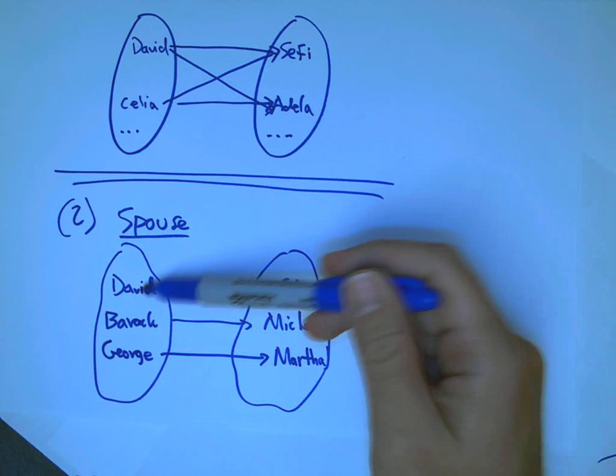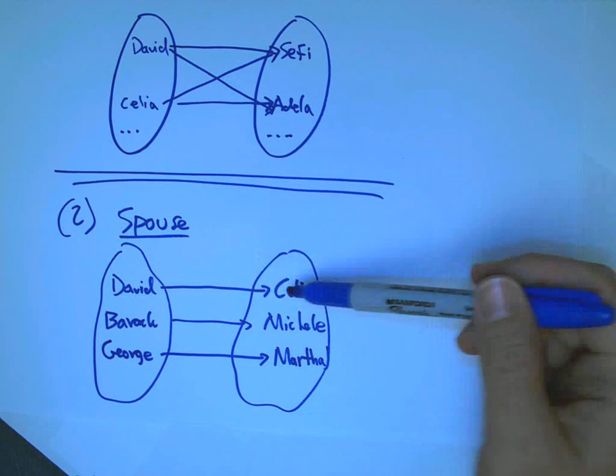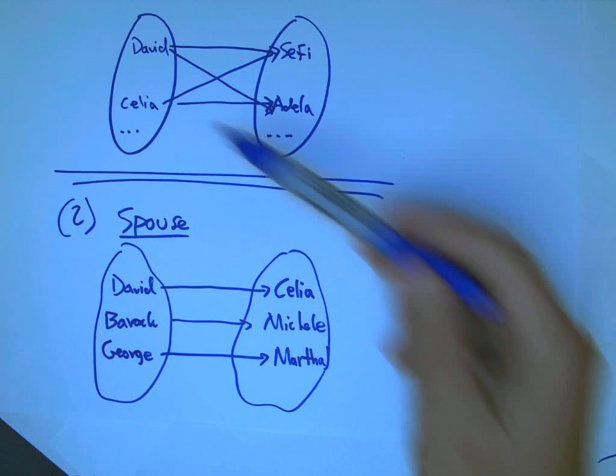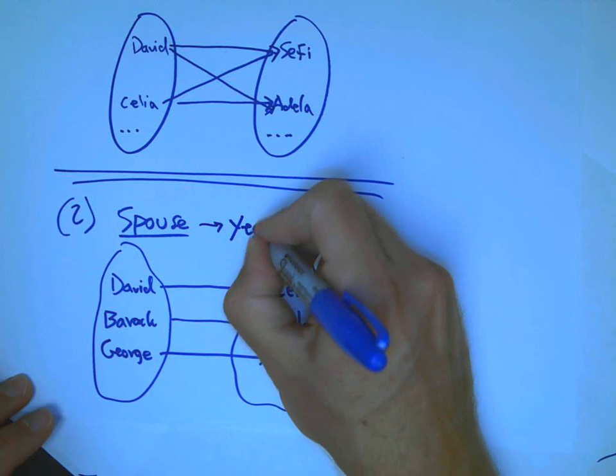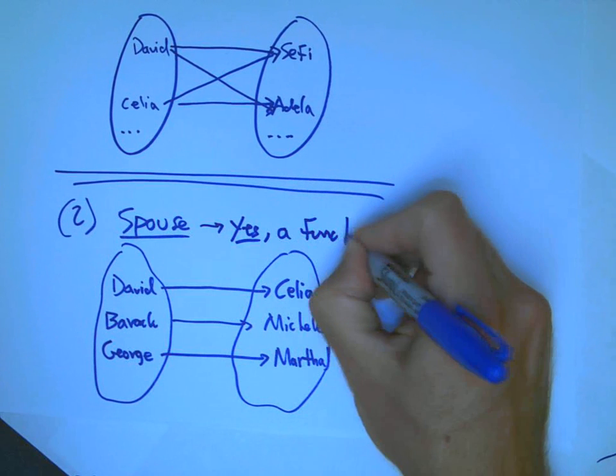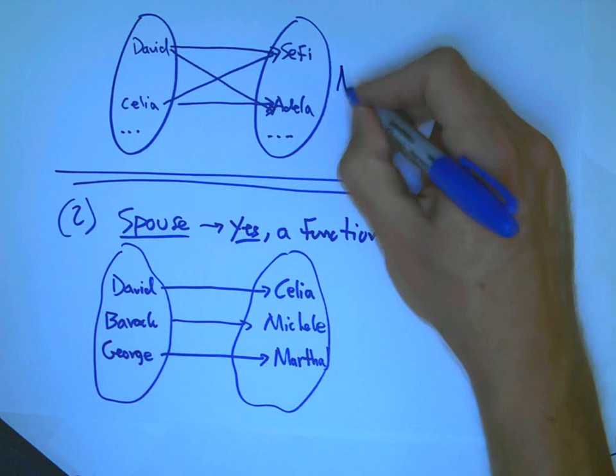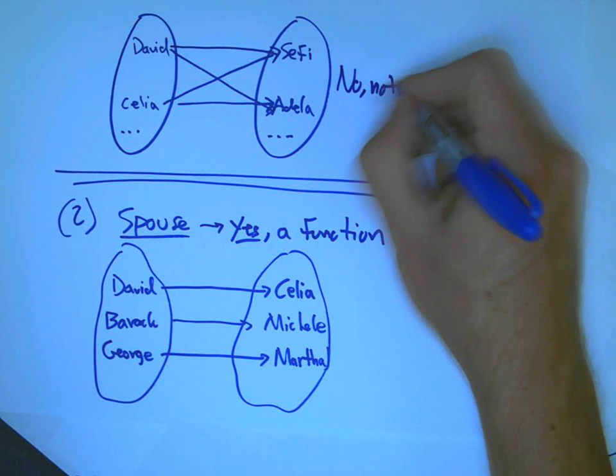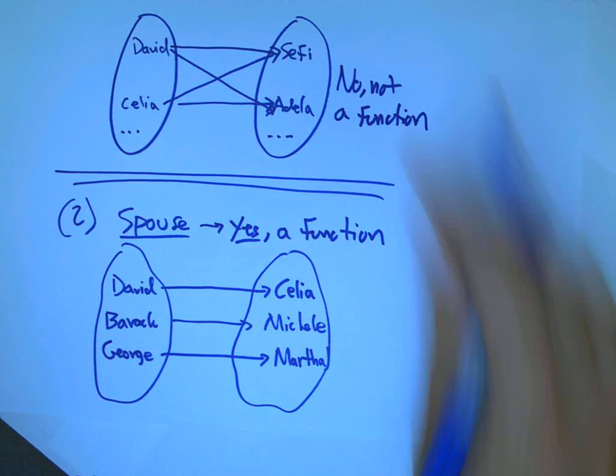If your society doesn't allow polygamy, then this is going to be a function. Each input has at most one output. And so, that's going to be something that's a function, whereas the parent-child relationship is not going to be. So, this guy, yes, is going to be a function, whereas the parent-child relationship was, no, not a function.